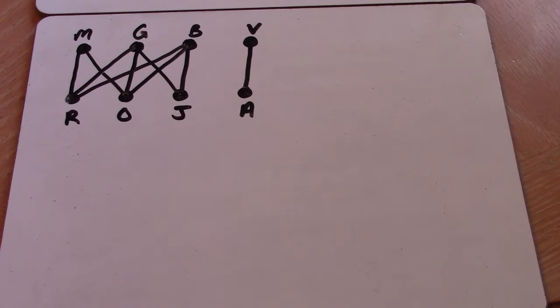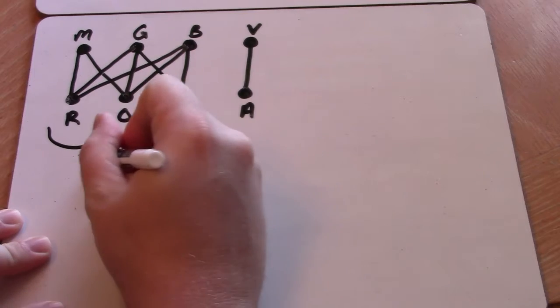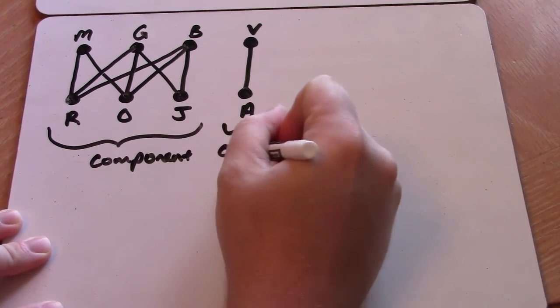The edges represent who those characters have dated throughout the many years that that has brought along. You will notice that this graph is disconnected, and it has two components. So this piece here would be a component, and this piece would be a component.